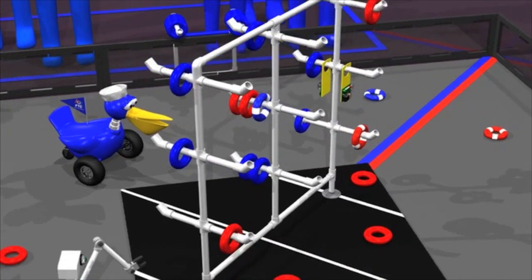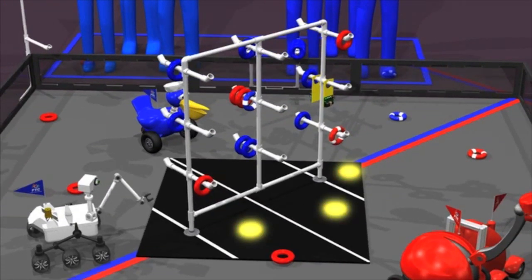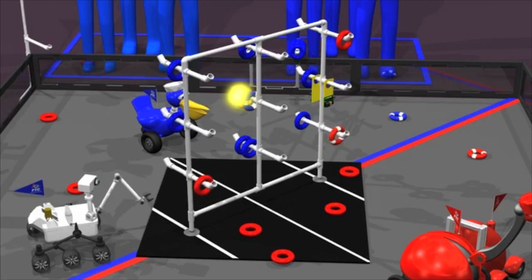The red alliance has three rings on the center floor goal for three points. They have two rings on the bottom row for 10 points, two rings on the middle row for 20 points, and one ring on the top row for an additional 15 points. That's a ring score of 48 points.